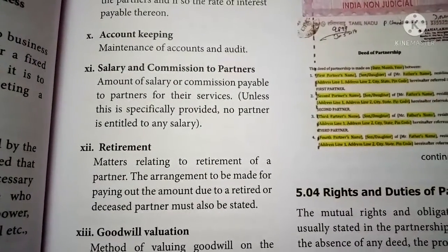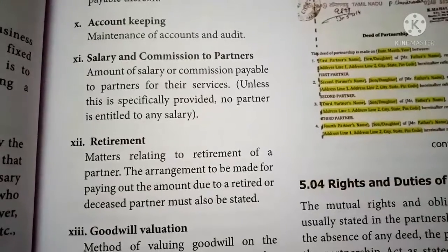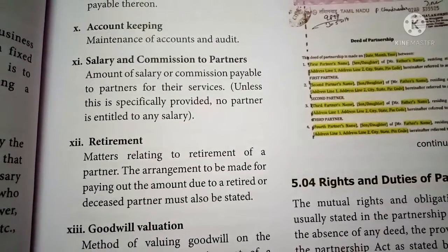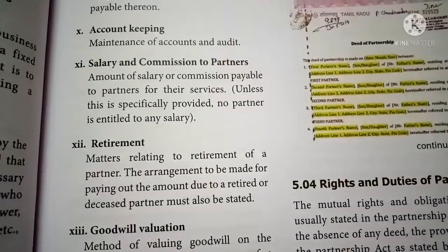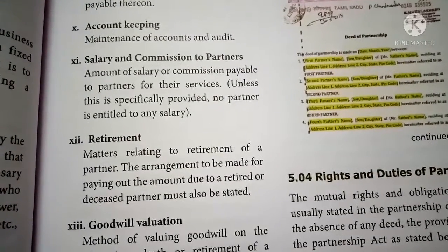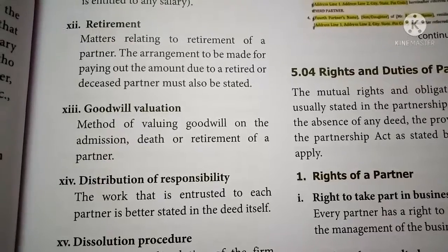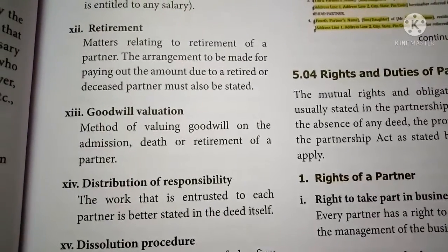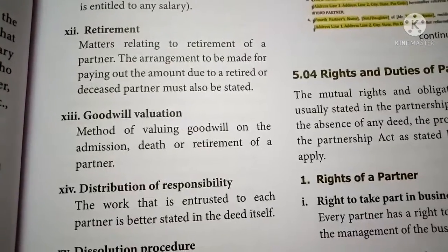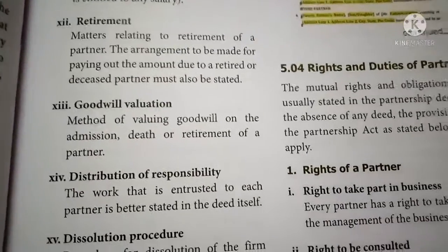Retirement: the partnership deed will specify the conditions allowing a partner to retire from the firm. It covers matters related to the retirement of a partner and the arrangement for paying out the amount due to a retired or deceased partner. Goodwill valuation: the method of valuing goodwill on the admission, death, or retirement of a partner is also specified in the partnership deed.